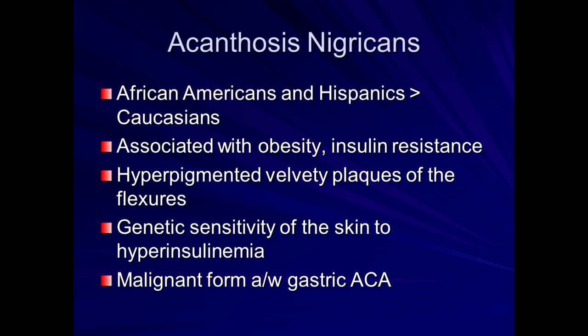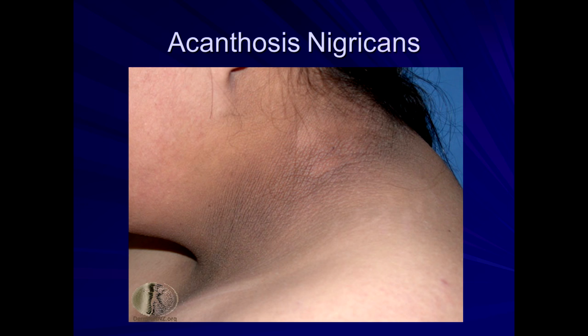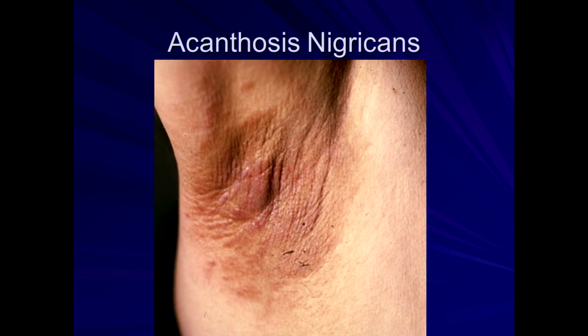Here you see these velvety hyperpigmented plaques of a patient with acanthosis nigricans — this might be an adolescent or pre-adolescent with diabetes or insulin resistance. The patient comes in telling you they've been washing it off and just can't remove it. It's not going to wash off because it's a change in skin texture related to the insulin resistance slash diabetes. Here you see the hyperpigmented patches in the axilla.